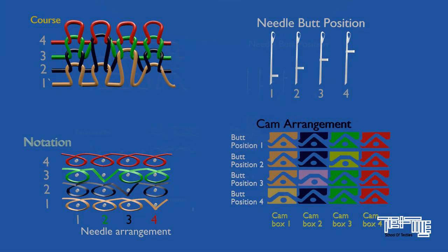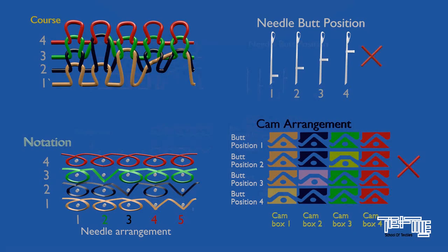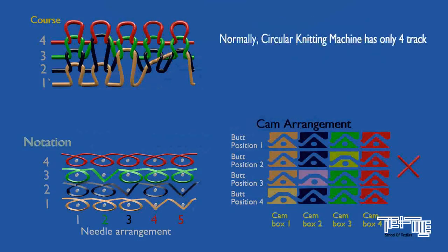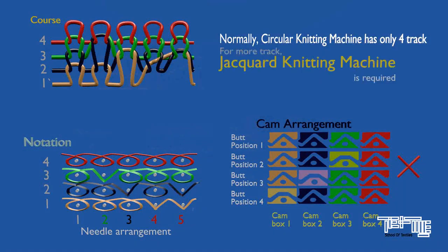Normally, in circular knitting machine, a 4-track cam system is used. But what if there is a design that requires more than 4-track? Normal knitting machine cannot produce this design. Here, jacquard is required.